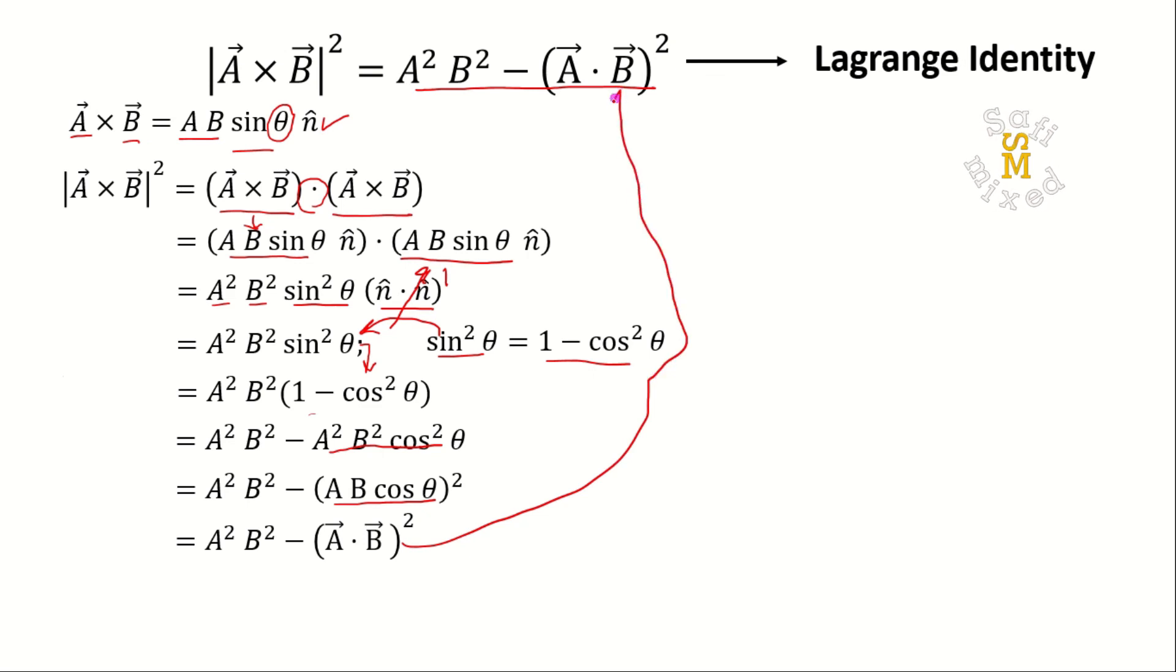And this is the required result of the Lagrange identity for two vectors A and B in a vector space.